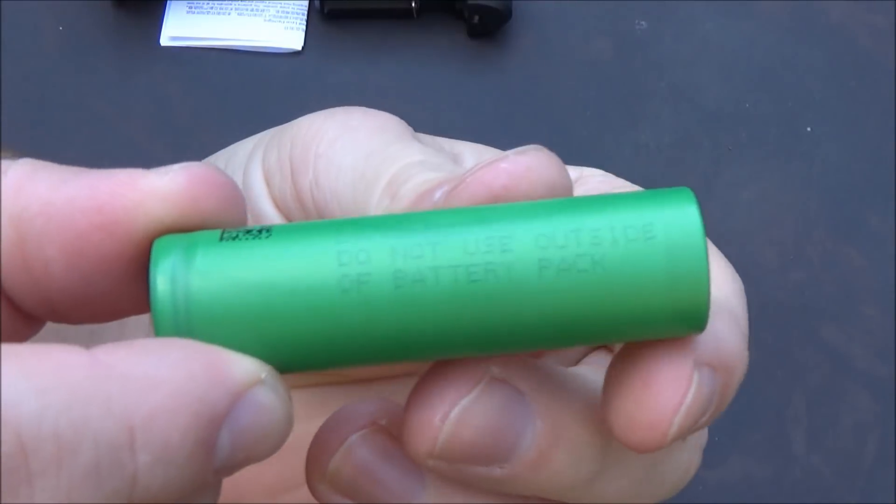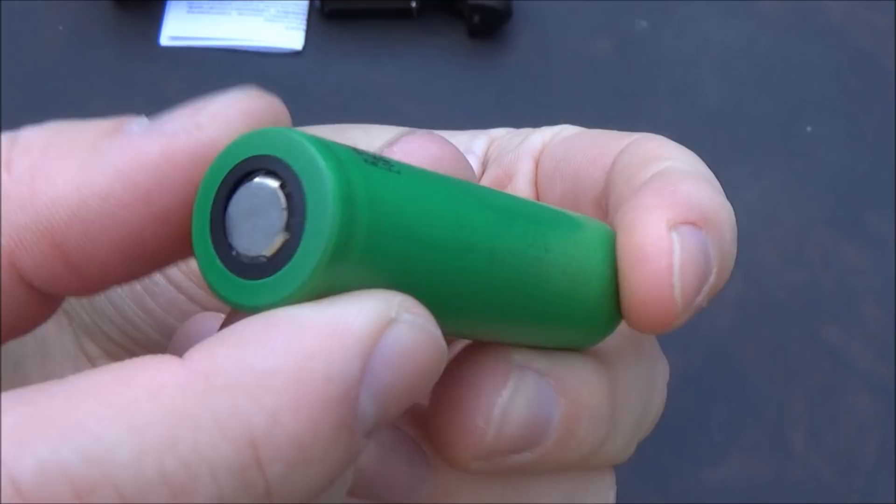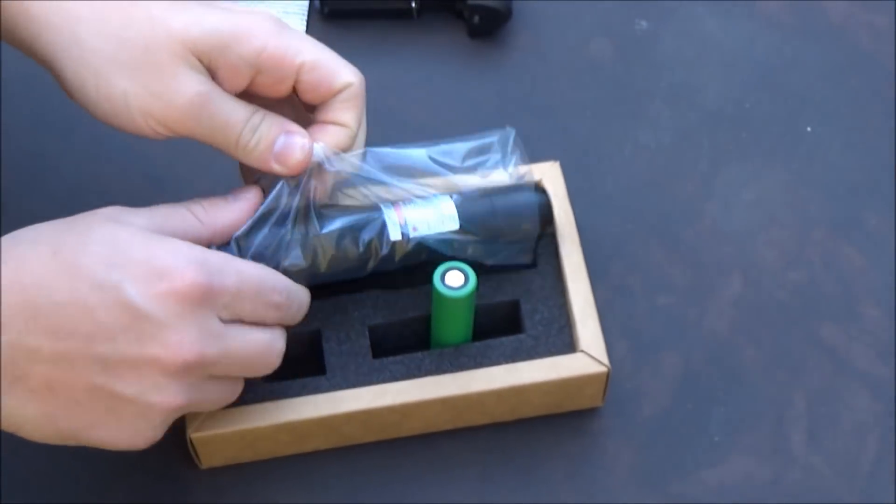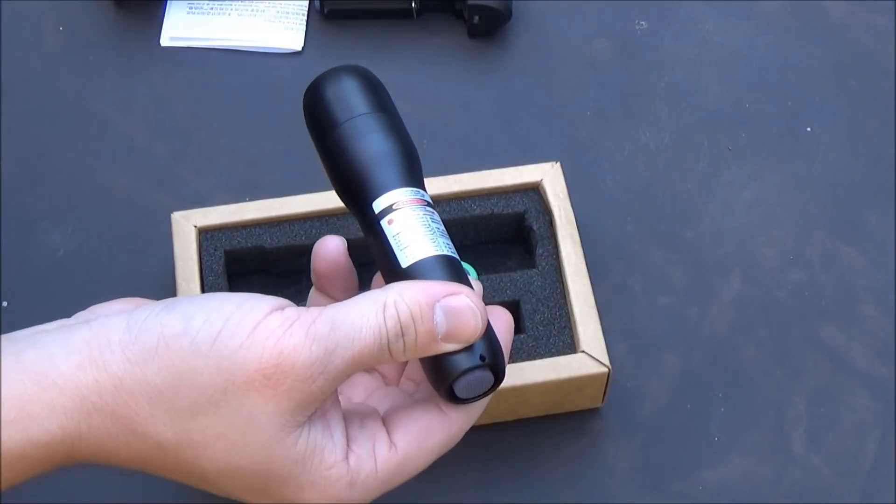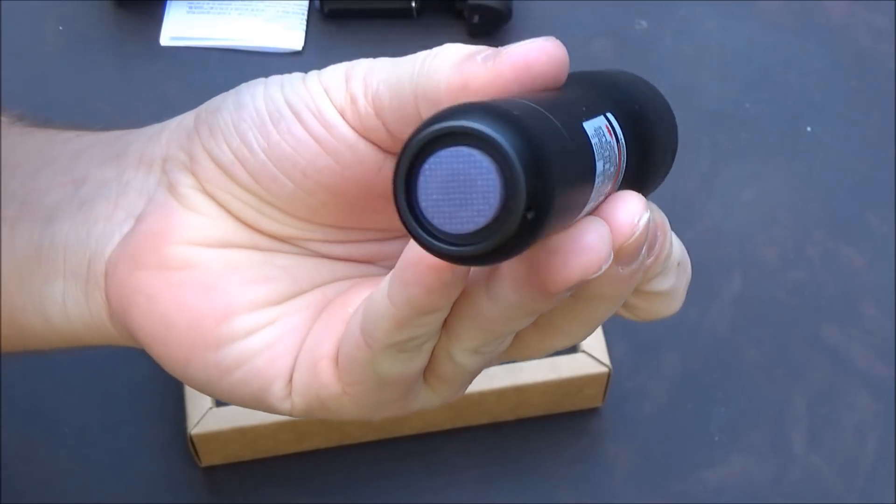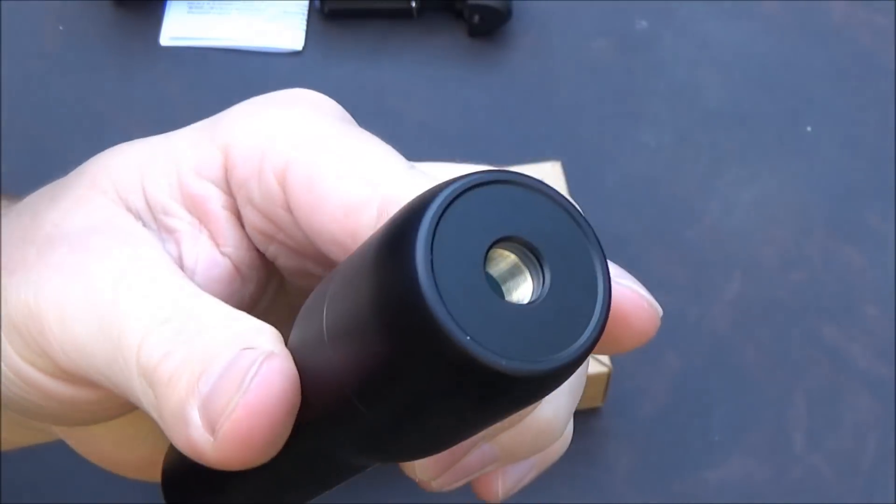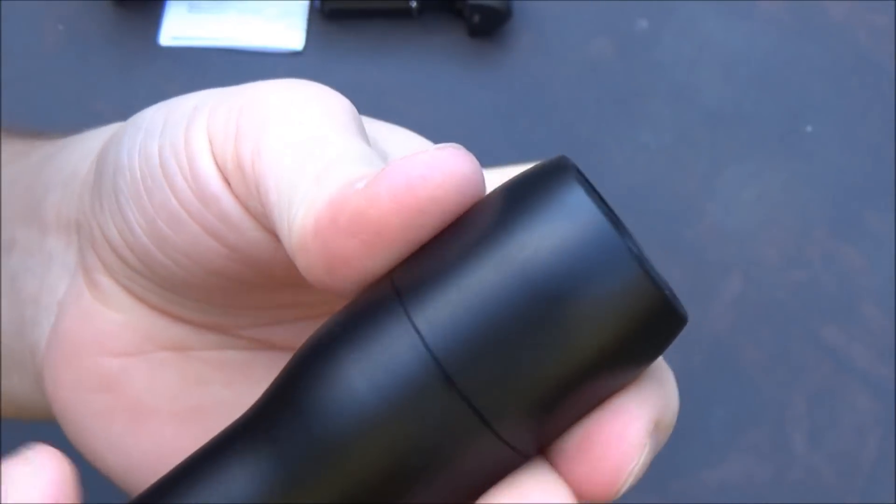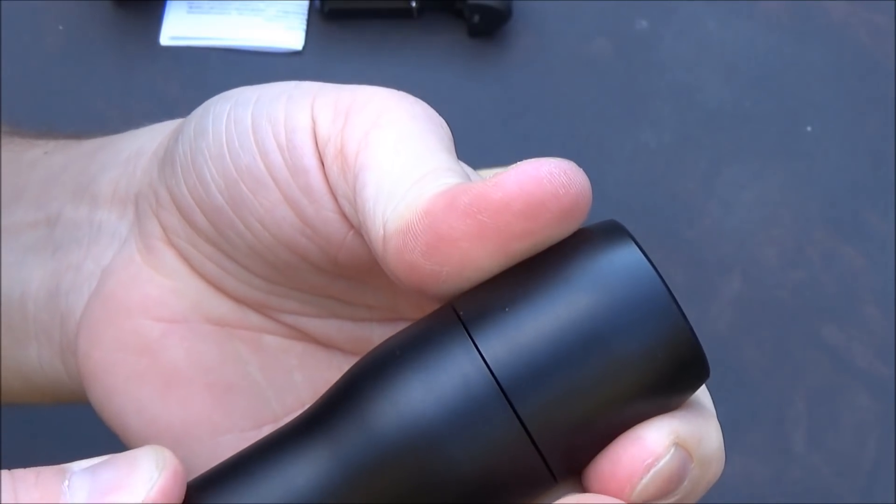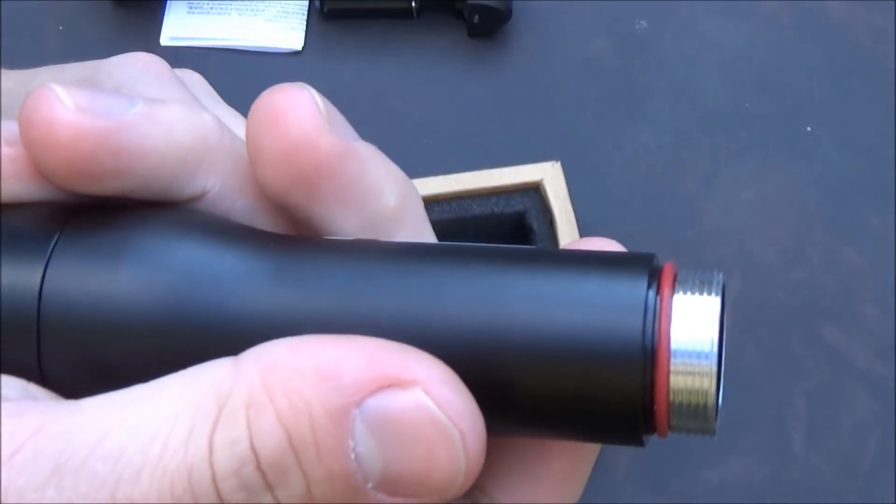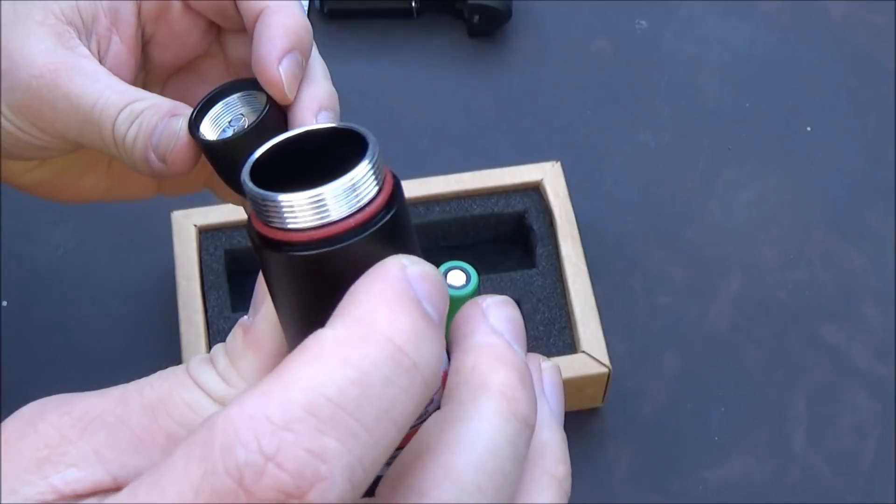It comes with one 18650 battery, that's what it runs on, and one of those cheap little 18650 chargers which you should probably throw away and buy an aftermarket one like a Tenergy. I can link it in the video description. The button is single push on, push off. It has an adjustable focus on the top and unscrews at the bottom to insert the battery.